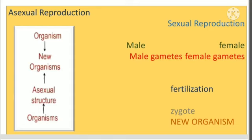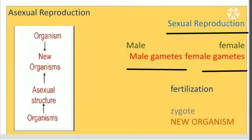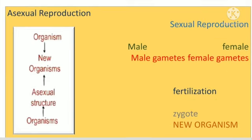Before knowing asexual reproduction, let us have a look at sexual reproduction. In sexual reproduction, male and female organisms produce male gametes and female gametes. These male gametes and female gametes fuse with each other — this process is called fertilization. Because of fertilization, a zygote is formed, and the zygote develops into new organisms.